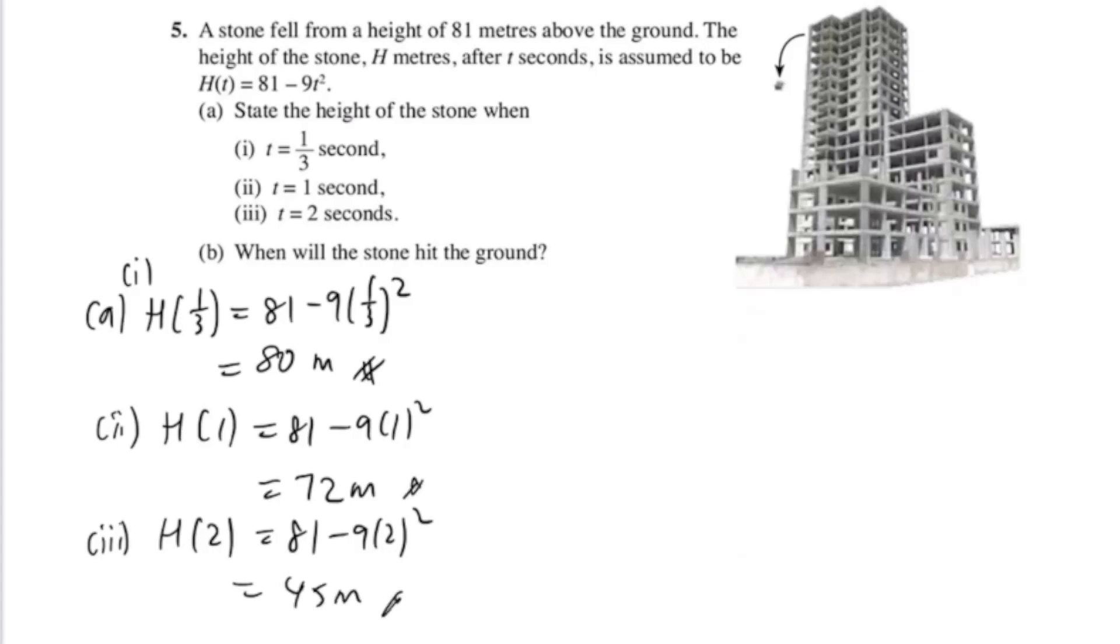Next one, when will the stone hit the ground? The stone will hit the ground when the height is 0. So we take 81 - 9t² and let it be 0. Here I think it's better we bring the 9t² over, but we rewrite: 81 = 9t². t² is now 9. Square root of 9 is 3. You don't have to put plus minus; time is always positive, so we take t equals to 3.